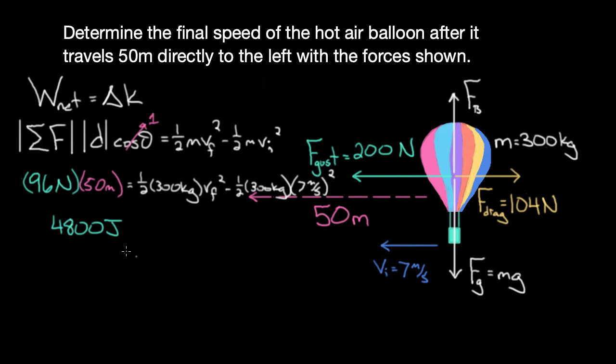That equals half of 300, which is 150 kilograms, times vf² minus—if you take half of 300 times 7 squared—7,350 joules. That's how much energy the hot air balloon started with initially. Moving that to the left and adding them together, I get 12,150 joules, which is how much kinetic energy the balloon ends with.